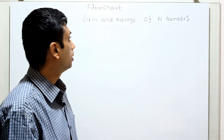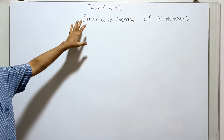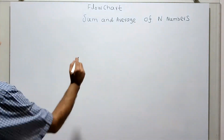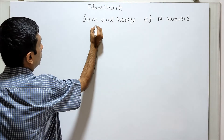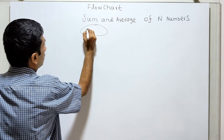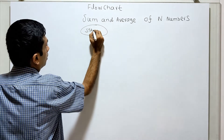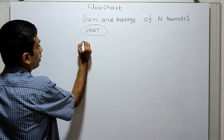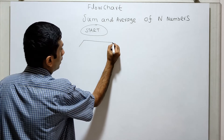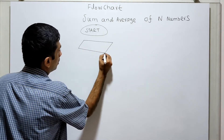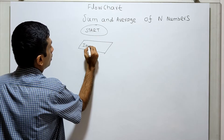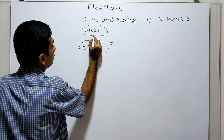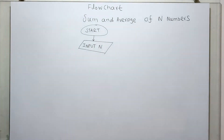Hello friends, we are going to draw a flowchart to calculate the sum and average of given n numbers. n is the range. I am starting the flowchart. Next, I am obtaining the range — input n from the user.